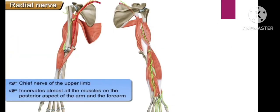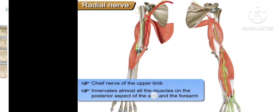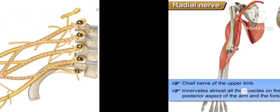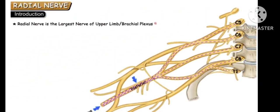To summarize: the radial nerve is the chief nerve of the upper limb, supplying the posterior compartment of the arm and forearm. The nerve root is C5, C6, C7, C8, and T1.